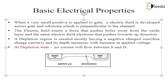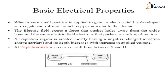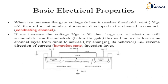So far we have studied three states: flat band state (VGS=0, no current), accumulation state (VGS negative, no current), and depletion state (small positive VGS applied, generating a depletion region between source and drain, still no current).